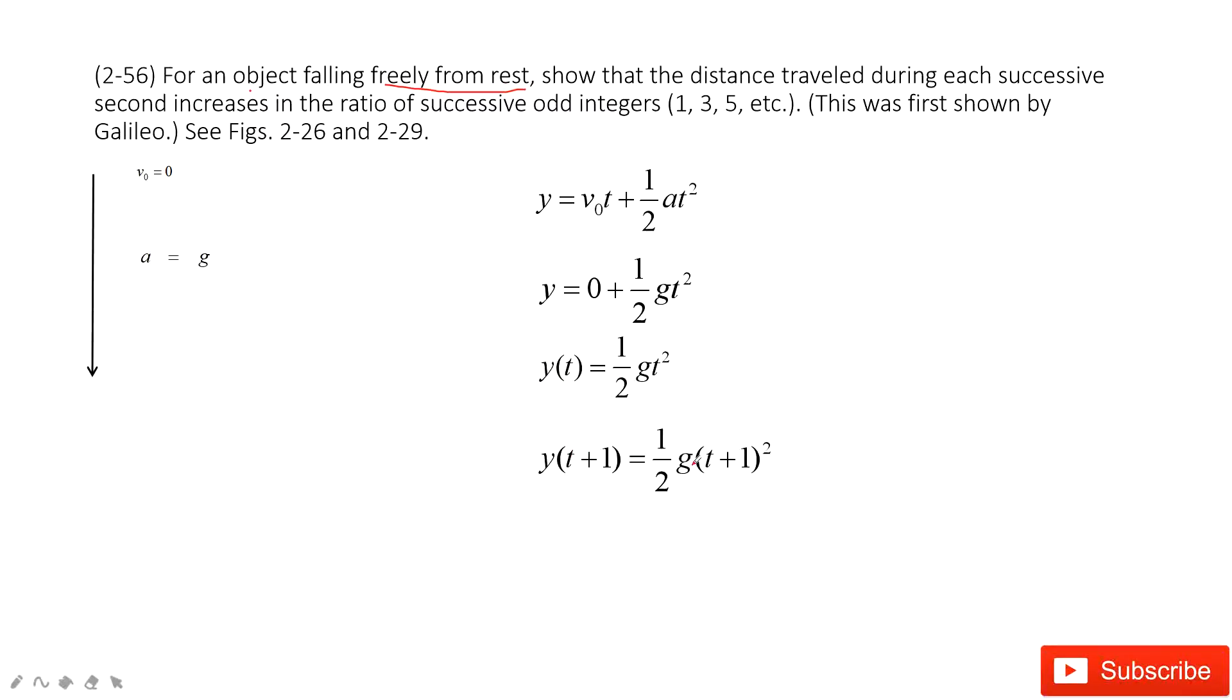So for t plus 1, we can write it as one half g times t plus 1 squared. And it shows the distance traveled during each second. So the distance traveled during each second is y of t plus 1 minus y of t.